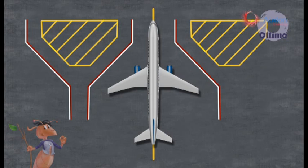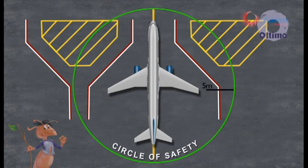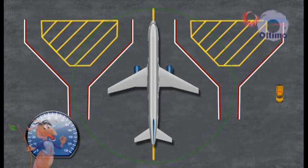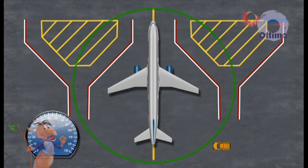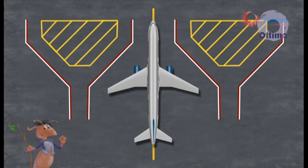One of the precautions is the circle of safety. The term circle of safety refers to an imaginary invisible circle which typically extends for 5 meters around the aircraft. Inside this circle, an inner zone covers the fuselage and engine areas with a 2 meter safety zone. All equipment approaching the circle of safety must be driven at a walking pace, that is less than 5 kilometers per hour.